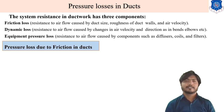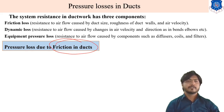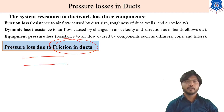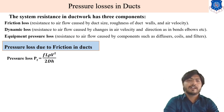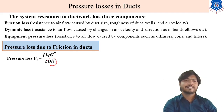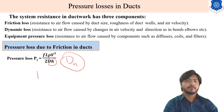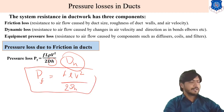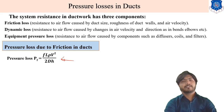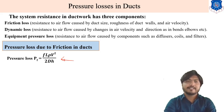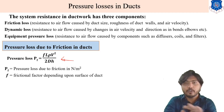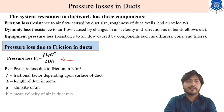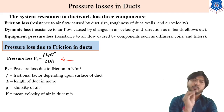Pressure loss due to friction in ducts is calculated using the Darcy-Weisbach equation: Pf = f·L·ρ·v²/(2·Dh), where Pf is pressure loss due to friction, f is the friction factor depending on duct surface, L is the length of duct, ρ is air density, v is mean air velocity, and Dh is the hydraulic diameter.